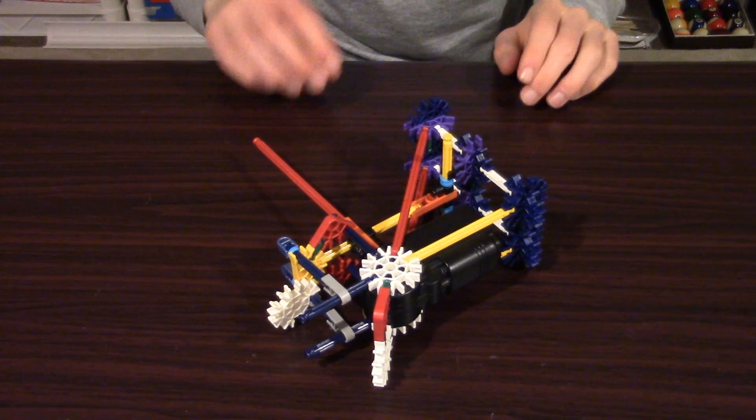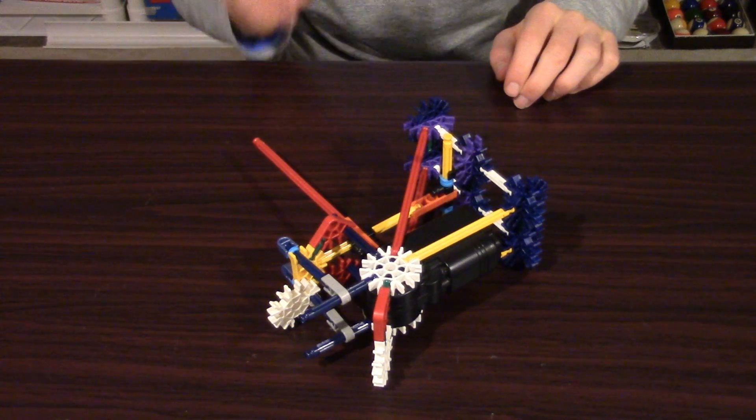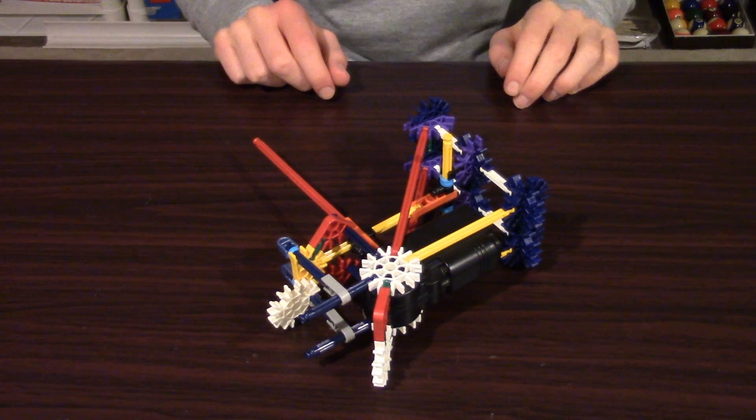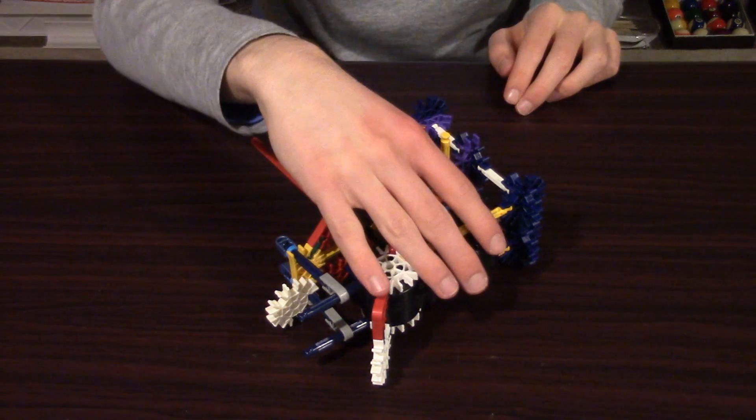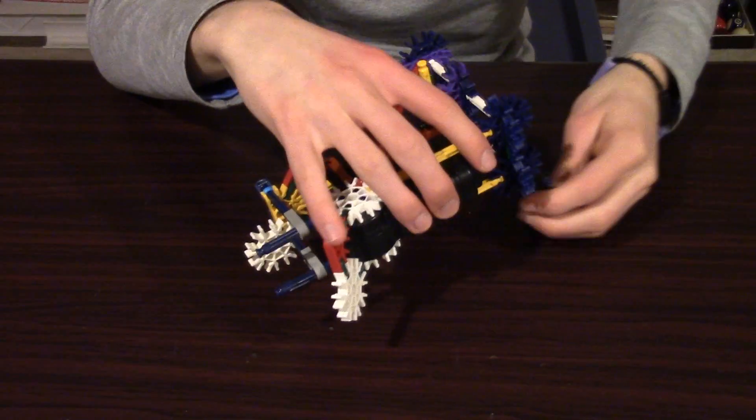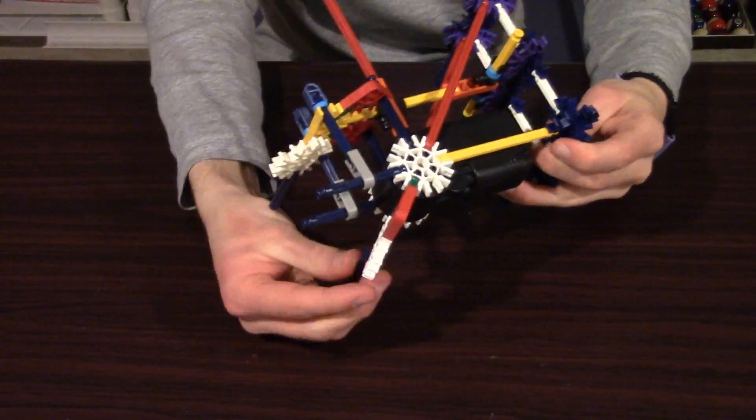But what if you wanted it rotated perpendicular to the table and elevated a little bit? Well, you can do that as well. Because now you can just add four more supports to the bottom of this. And there you go.